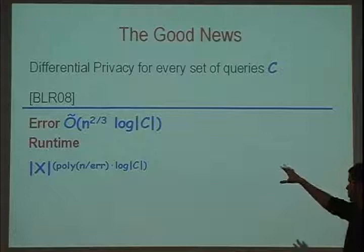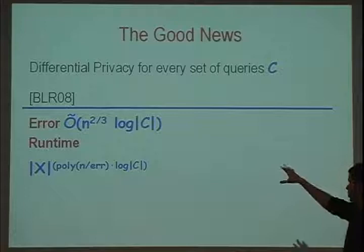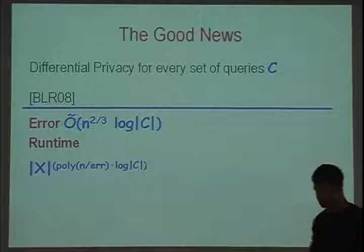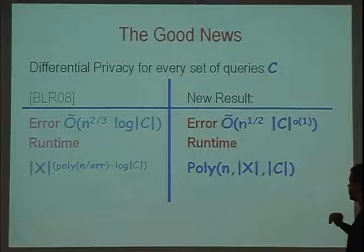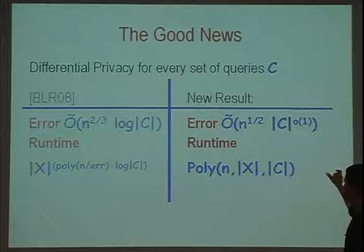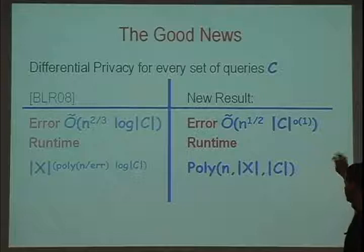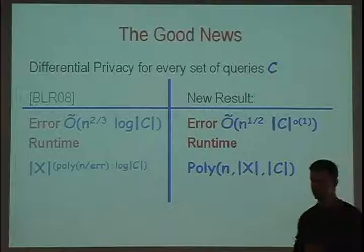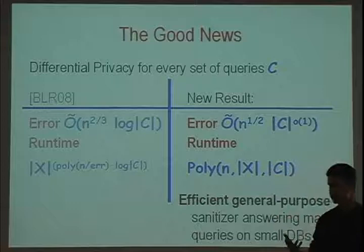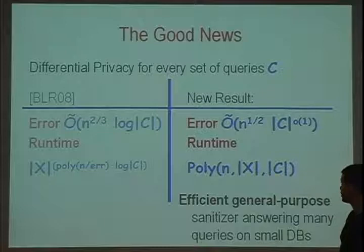That will be the main focus of the new results I'll talk about today. The question we want to ask is: can we efficiently sanitize? Can we get an algorithm we can actually implement? We want to consider the running time as a function of the query set size and the data universe. The Blum-Liggett-Roth algorithm had super-polynomial running time in both. What we can achieve for sanitizers with a synthetic database output — good news — is a polynomial time algorithm running in polynomial time in the data universe size and the query set size.